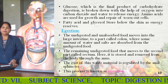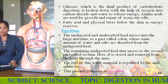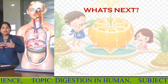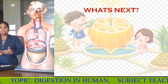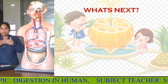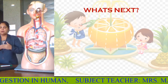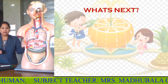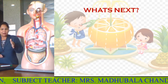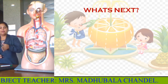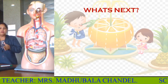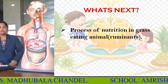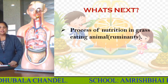Here we finish with all five processes of nutrition in human beings — the complete digestive system. In the next class, we will discuss nutrition in herbivores. As introduced in the chapter, the mode of nutrition is very different in carnivores, omnivores, and herbivores. We have discussed organisms from amoeba to paramecium to hydra, to frog, to human beings. Next comes the herbivores — the grass-eating animals, called ruminants.